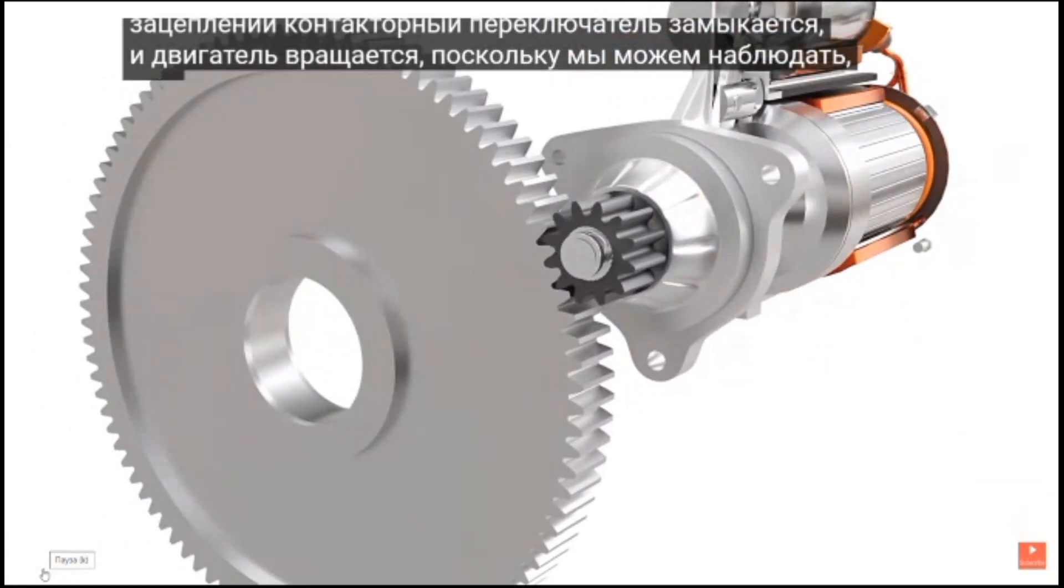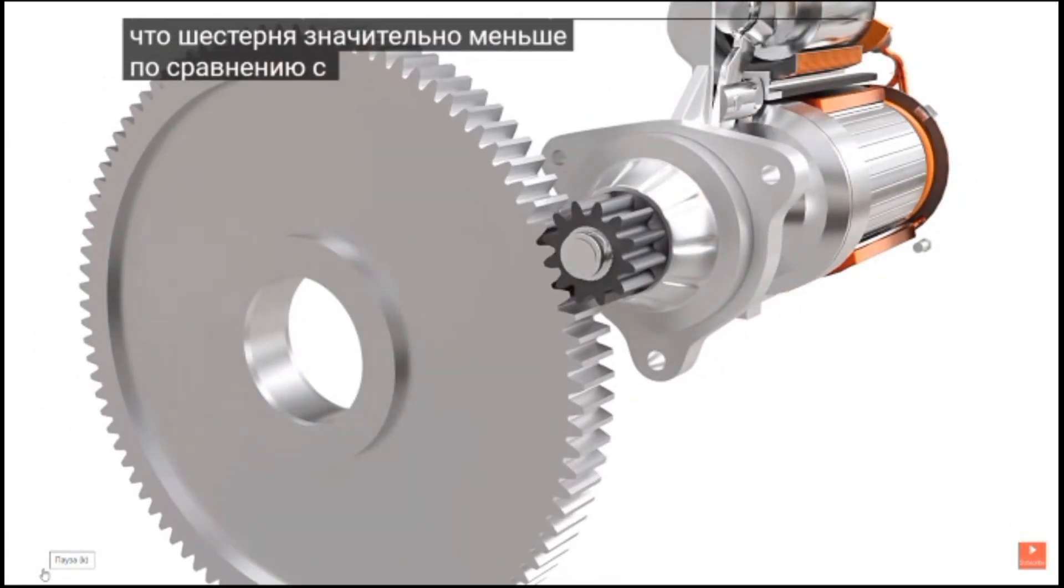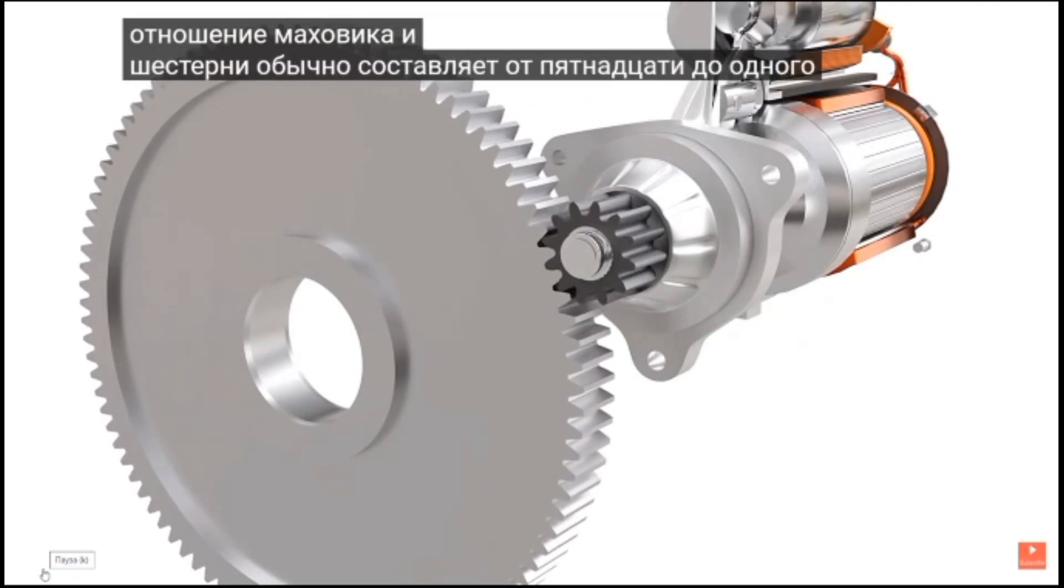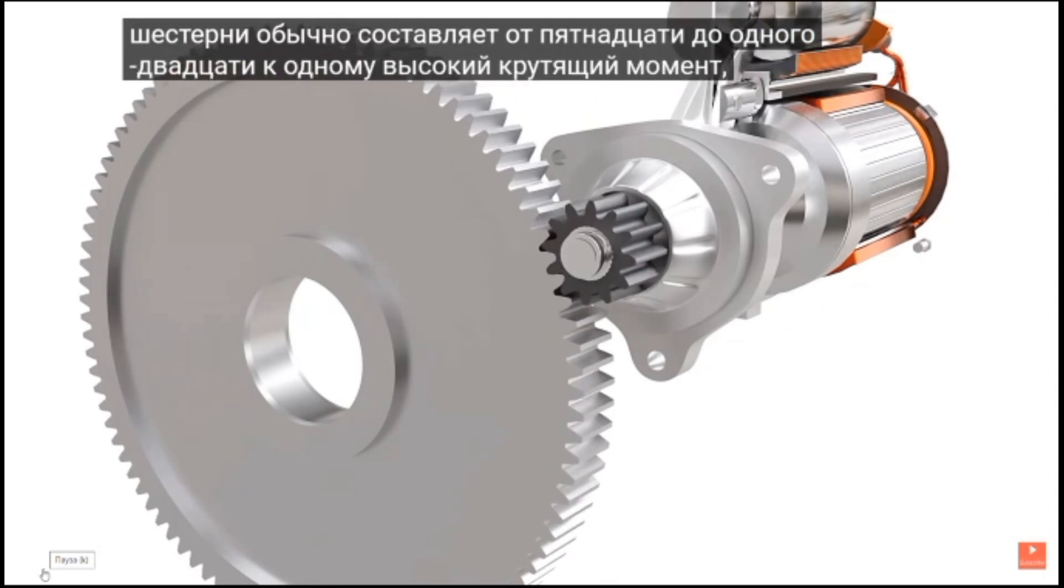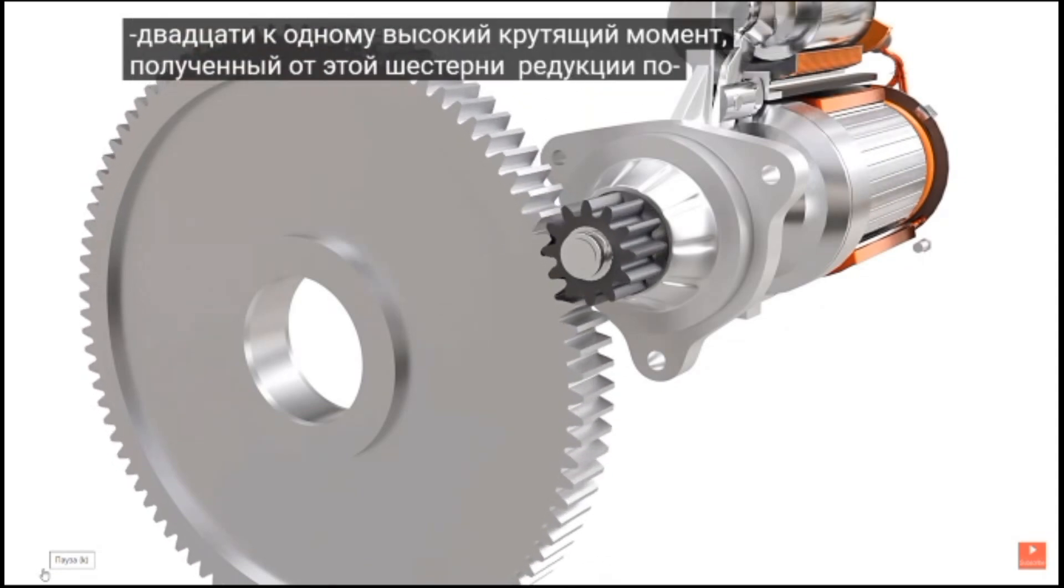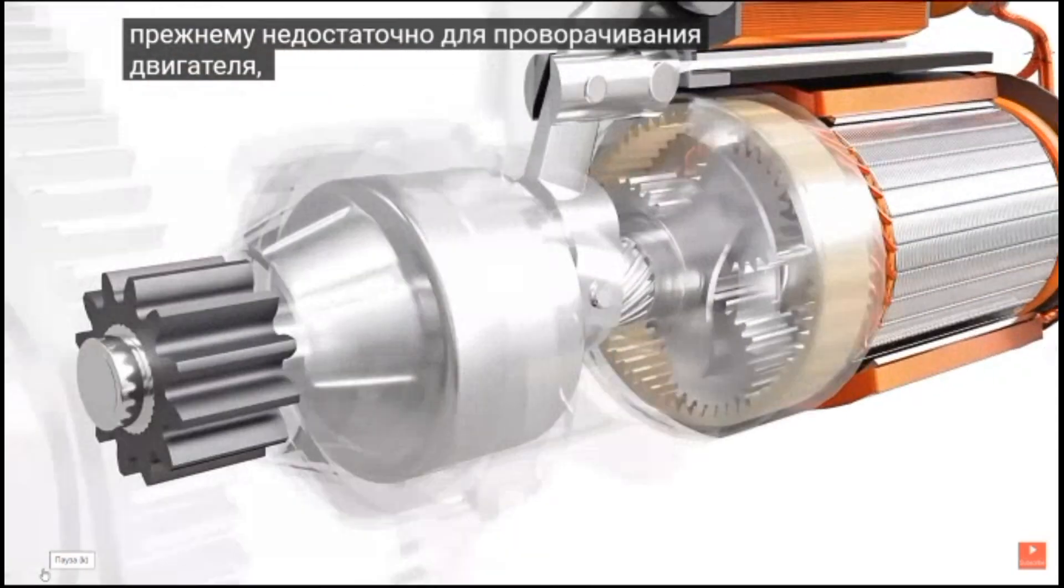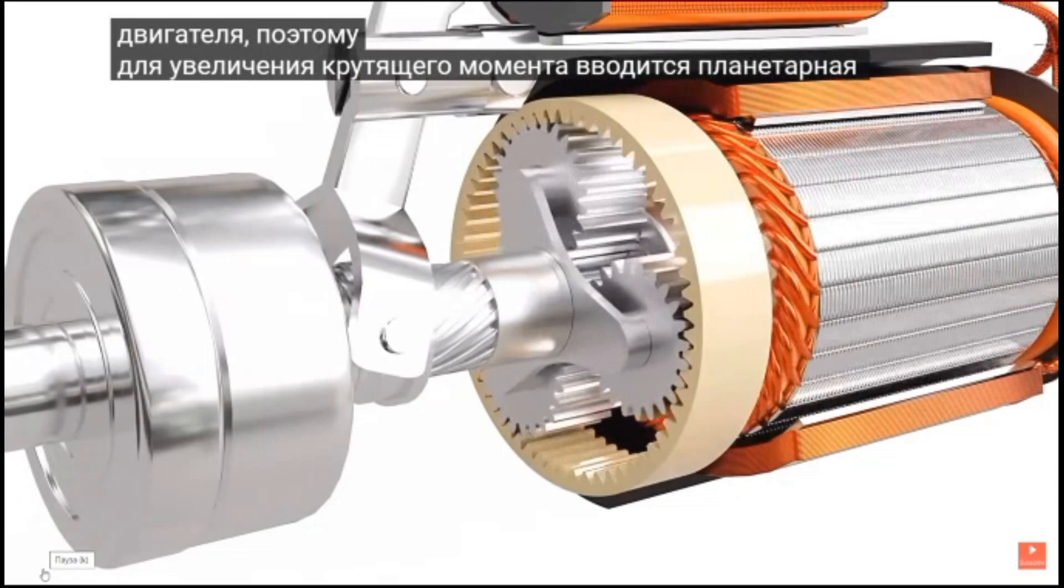As we can observe that the pinion is considerably small compared to the flywheel, the gear ratio of the flywheel and pinion is generally from 15 to 1 to 20 to 1. The high torque obtained from this gear reduction is still insufficient to crank the engine. So, a planetary gear set is introduced to increase the torque further.